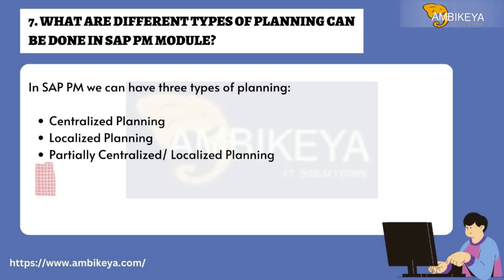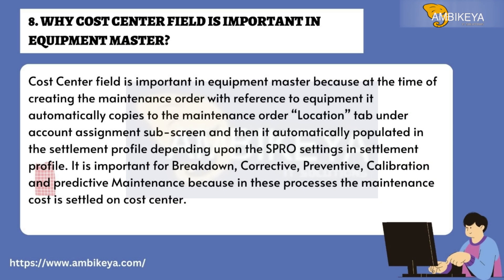Question number seven: What are the different types of planning that can be done in SAP PM? In SAP PM, we can have three types of planning: centralized planning, localized planning, and partially centralized-localized planning.